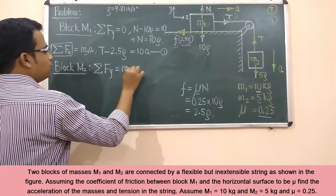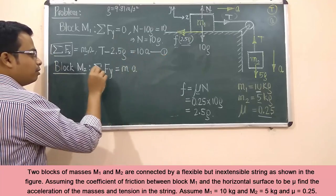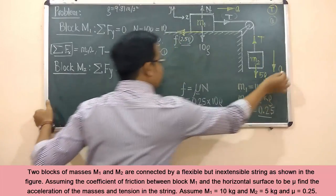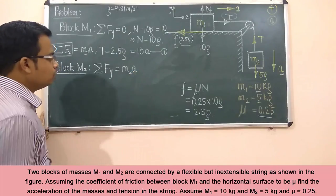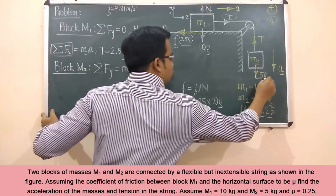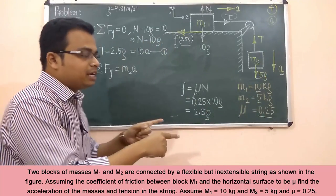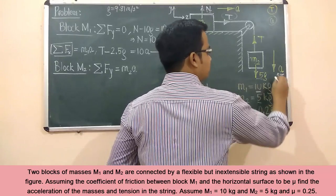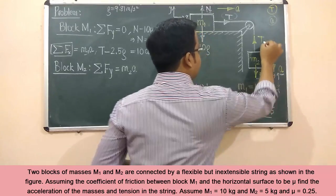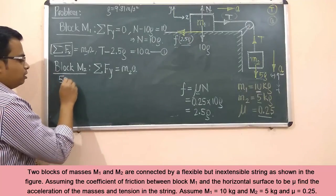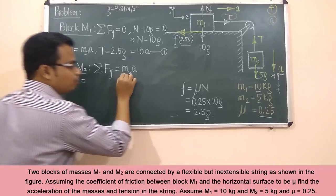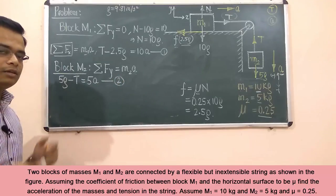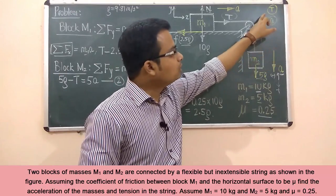Applying Newton's second law to block m2 in the y-direction: summation of forces equals m2 times acceleration a. The dominating force 5g is positive and tension T is negative, giving us: 5g minus T = 5a. This is Equation 2. We now have two equations and two unknowns — tension T and acceleration a.